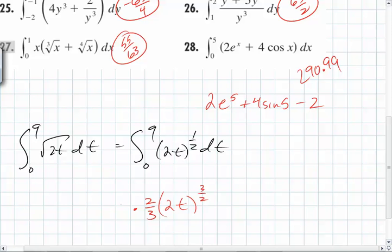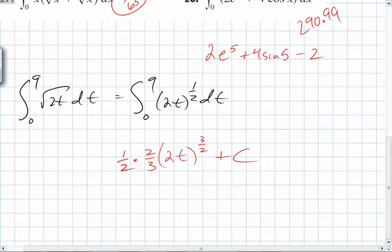So what do you have to park out front to get rid of that 2? 1 half. So here is your true integral. It comes out to be 1 third 2t to the 3 halves plus c is your integral.